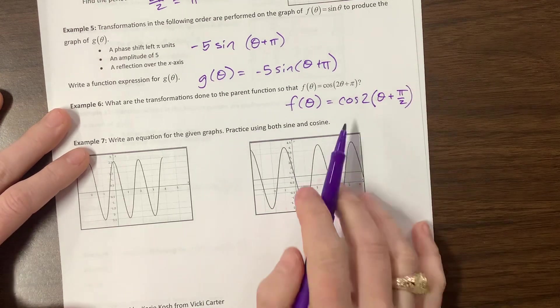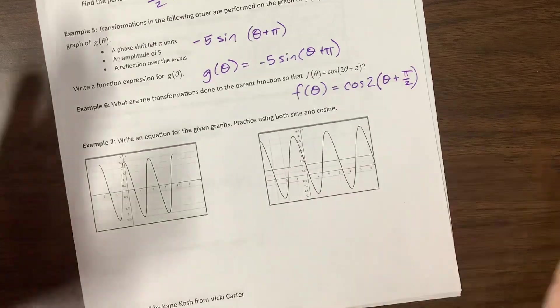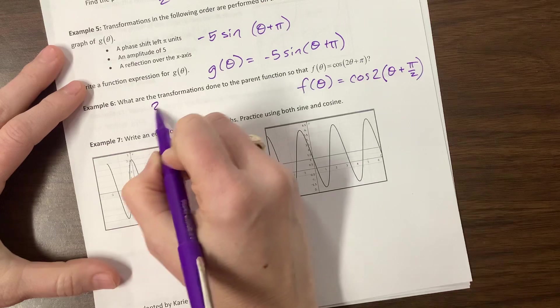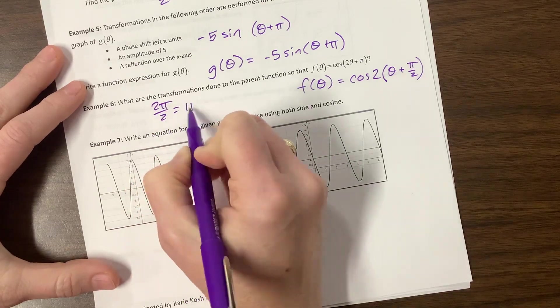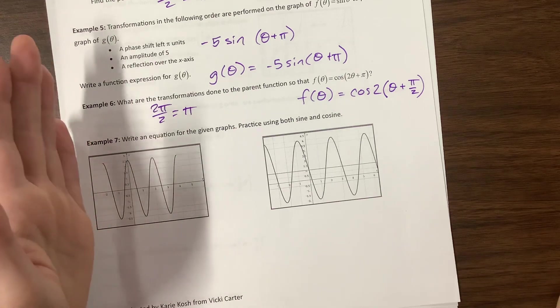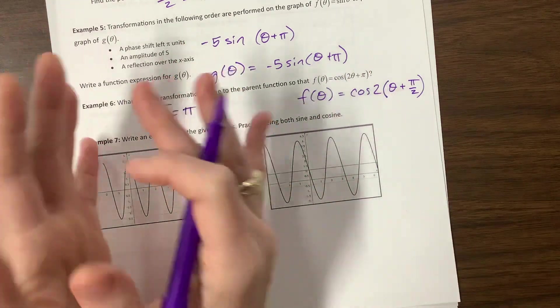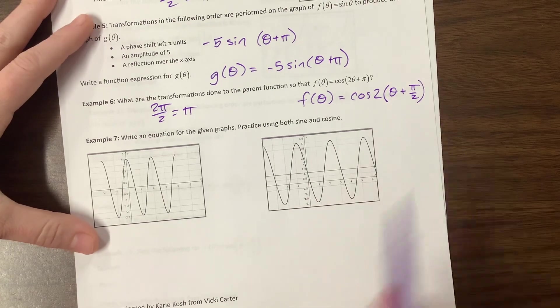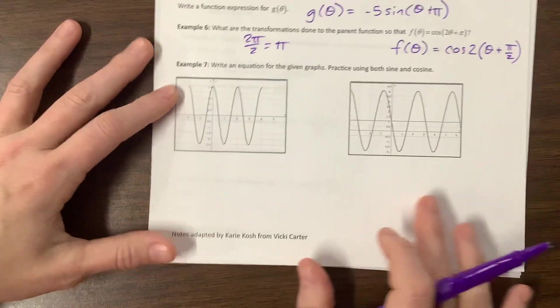Okay, so what were the transformations? We have a new period of 2 pi over 2 is equal to pi. We have a new period of pi, so this had a horizontal dilation of a factor of one half, and then we shifted to the left pi over 2. I don't feel like writing that down. You heard me, right?